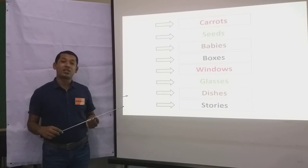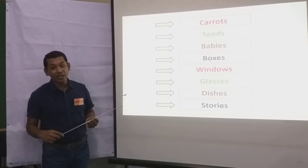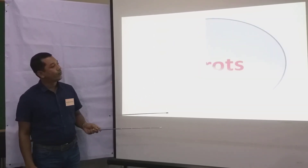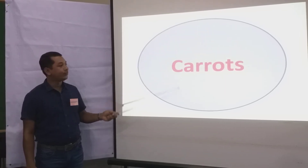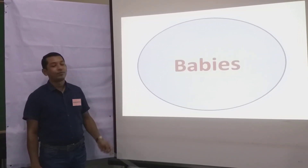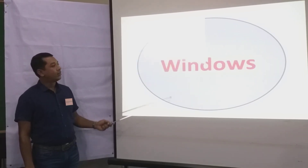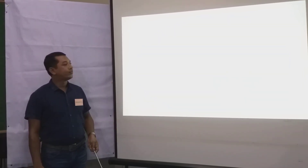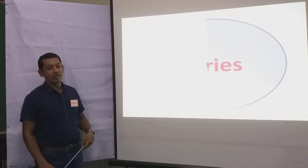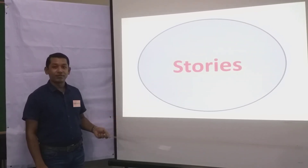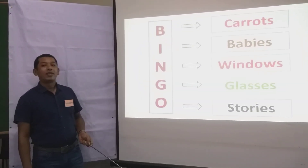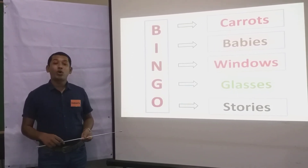When five words are crossed out, then you say — Bingo! Okay, my dear students, let's start. First one is carrots. Second one is babies. Third one is windows. Fourth word is glasses. And last one is stories. Congratulations. You have won the game.